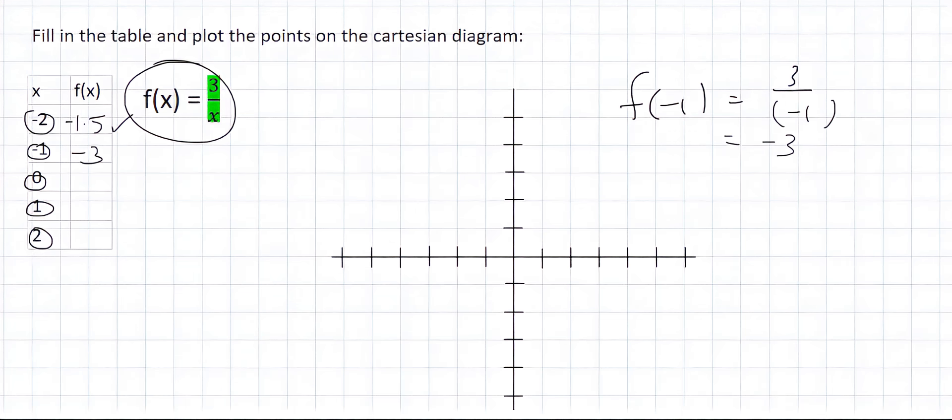I then plugged in minus 1 and got minus 3. Here's an interesting one. If you plug 0 into this equation, try that on your calculator and you're going to get an error. Absolutely fine, don't worry about that. Just say error. We're going to talk about that. That's a new feature for this kind of graph. If you then plug in 1, you're going to end up with 3. And lastly, we'll plug in the value of 2 and end up with 1.5.